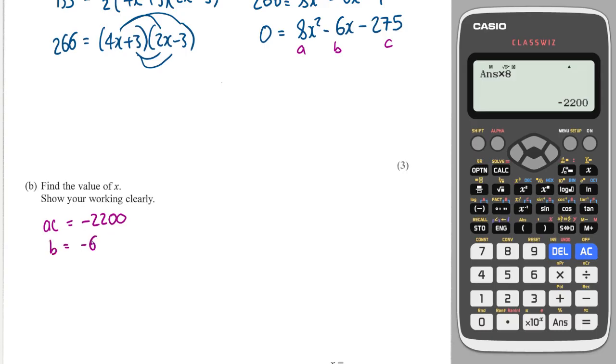So, I've got to find two numbers that multiply together to make this, and add together to make minus 6. Well, I know that this is the same as minus 22 times 100, so it's also the same as minus 44 times 50.